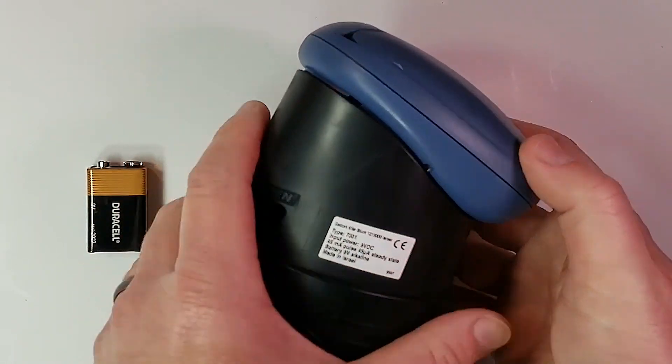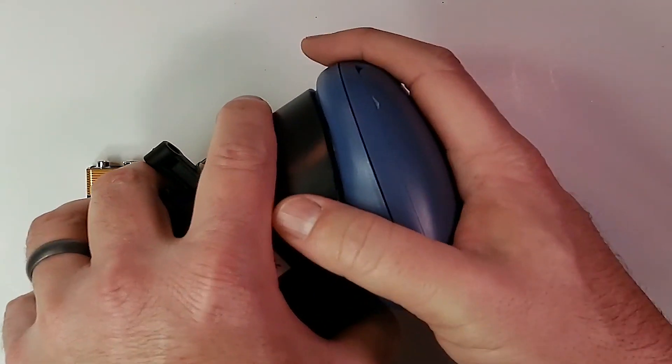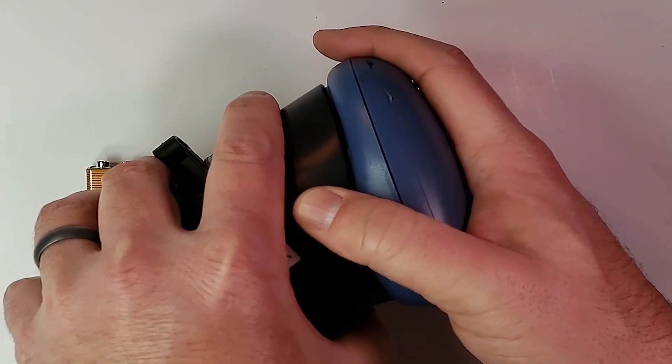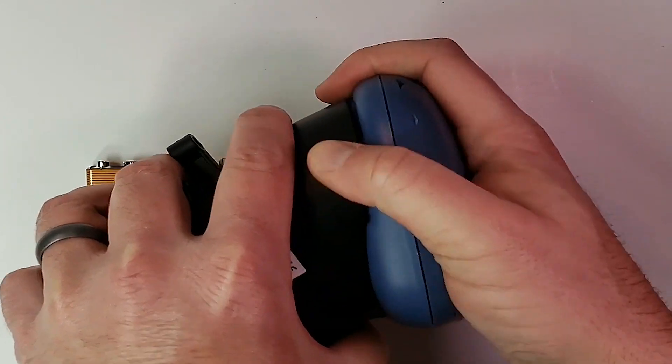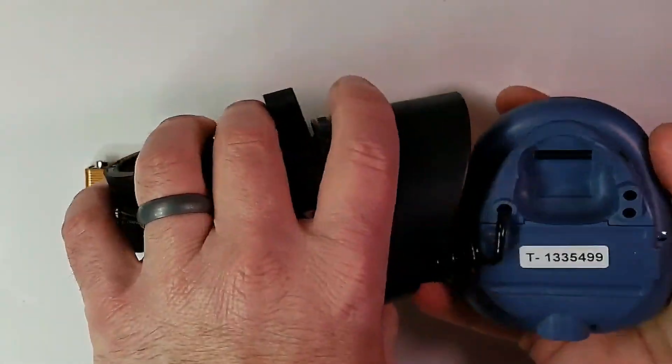First step is going to be putting in the nine volt battery. So we want to just give this a little bit of a pry and it pops right off.